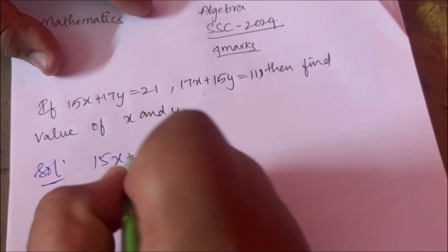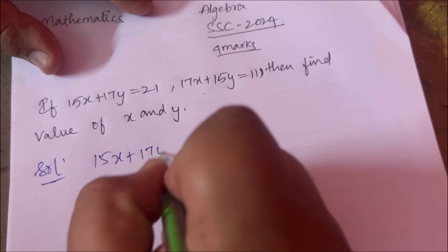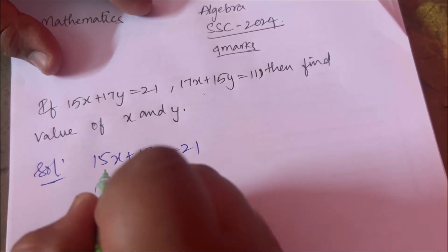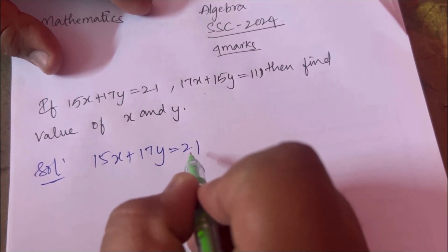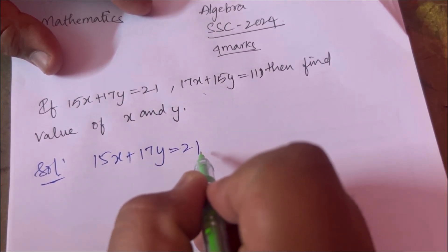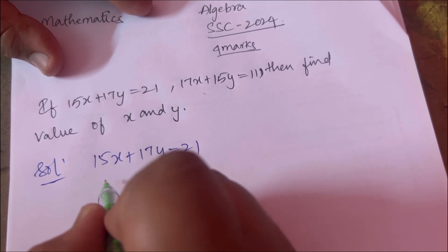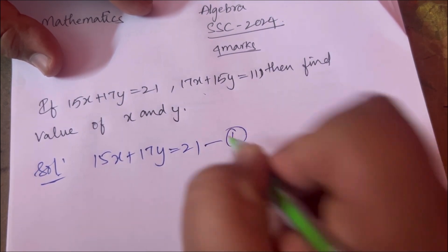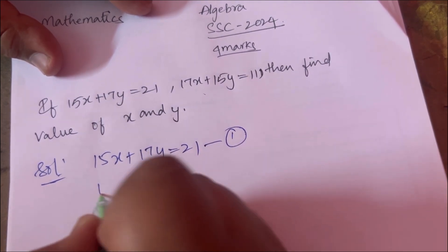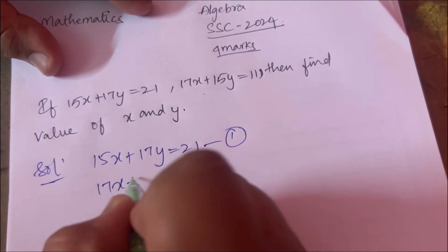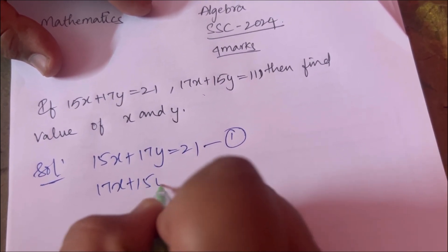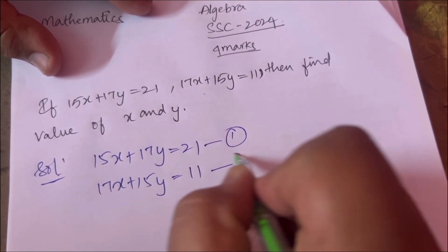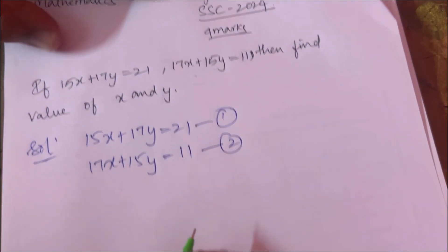First we need to write the two equations one by one. Equation 1: 15x plus 17y equals 21. Equation 2: 17x plus 15y equals 11.